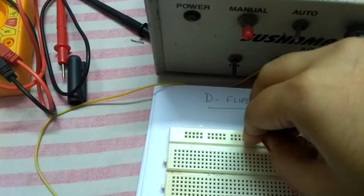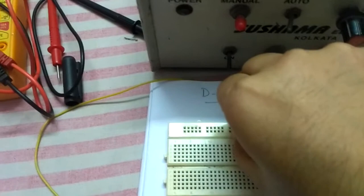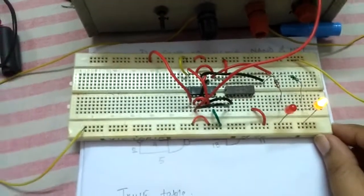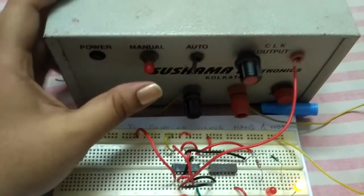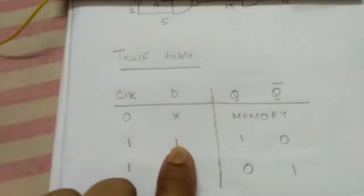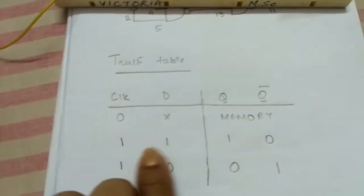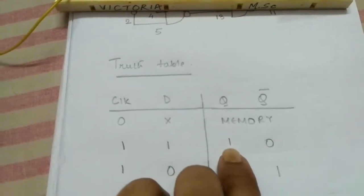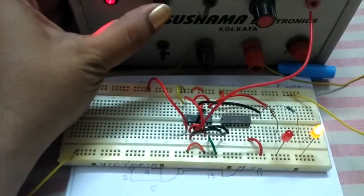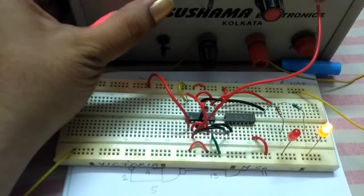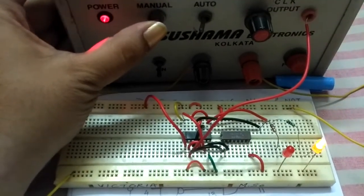Now I make D equal to one, and I apply a clock pulse. As per the truth table, when D is one and a clock pulse is applied, Q will be one and Q-bar will be zero. You can see Q is glowing and Q-bar is zero.